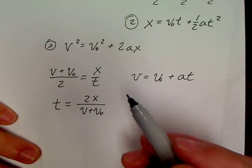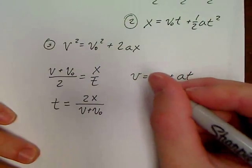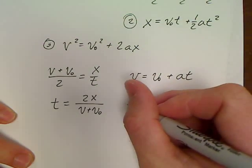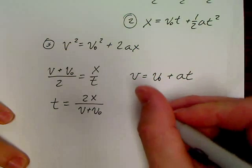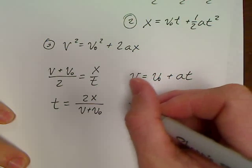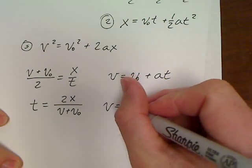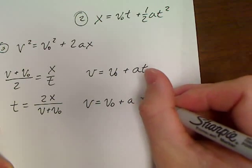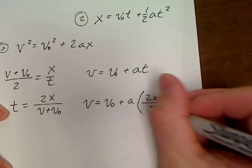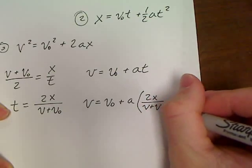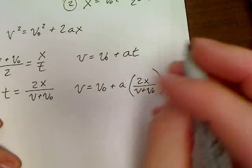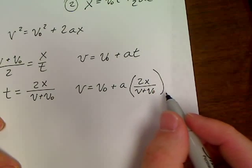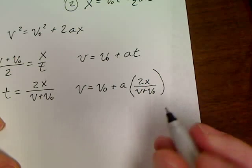So if we take this now, plug it back into the other equation, we plug this back into here. We've got v equals vo plus a times 2x over v plus vo. Now, if we do a little work on this equation, finish the algebra.